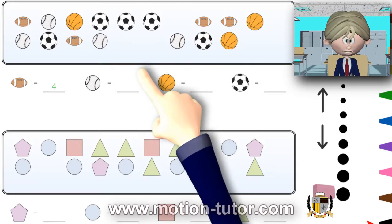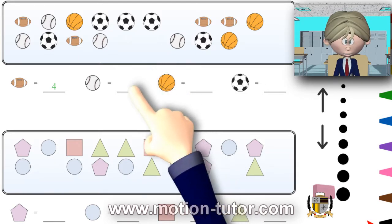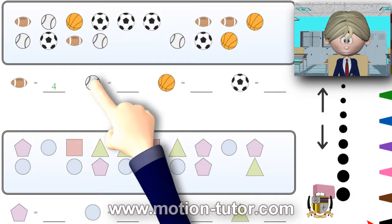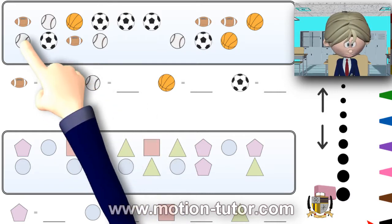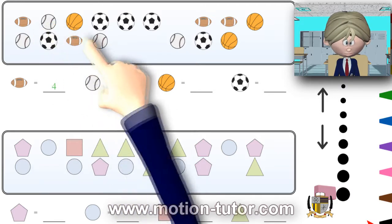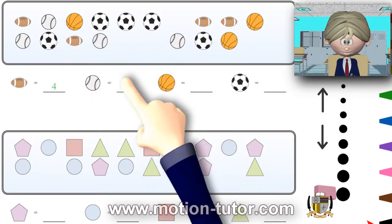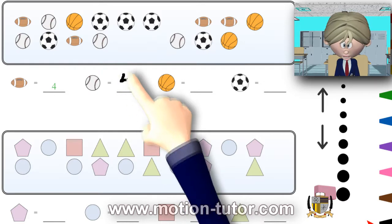Now with that in mind, let's continue on. How many baseballs do you see? Well, I see one, two, three, four baseballs, so I'll write the number four here.